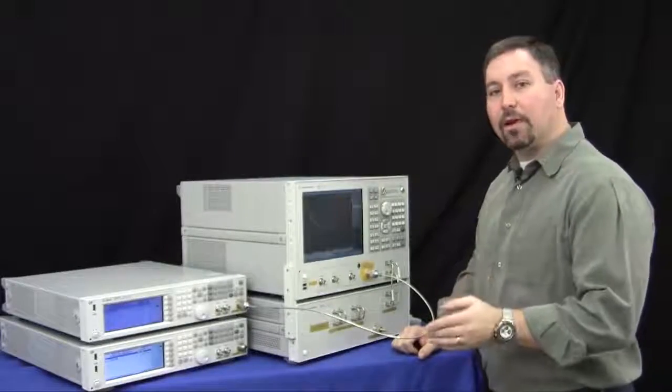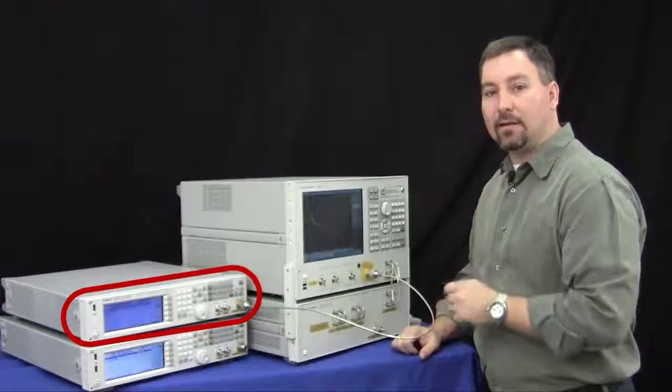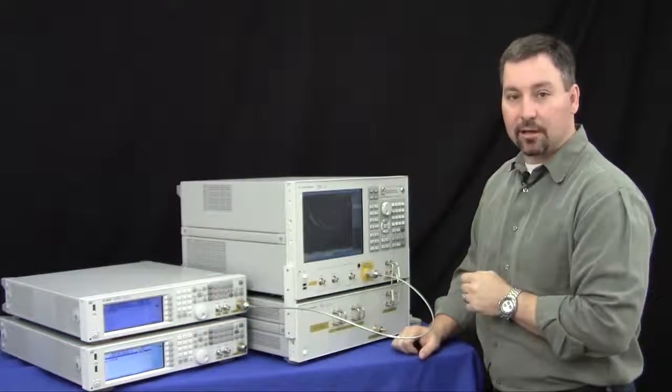So first we're going to look at the first generation MXG. I have it set up here with 1 gigahertz frequency at 10 dBm of power output. It's just a CW signal coming into the signal source analyzer.